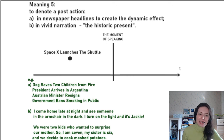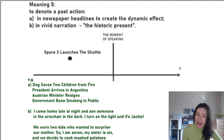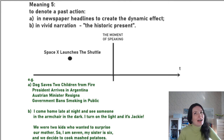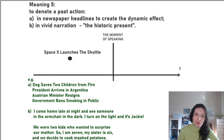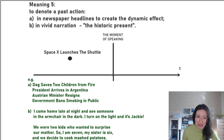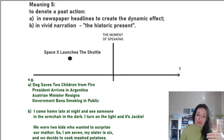It works exactly the same way in English. You say: 'I come home late at night and see someone in the armchair in the dark. I turn on the light and it's Jackie.' Or: 'Yesterday I had a very good mood and I decided to put on my white coat. I put on my white coat, I go outside, I stand at the bus stop and wait for my bus. And suddenly a car passes by and splashes mud all over my coat.' I was telling a past story, but as soon as I wanted to make it vivid, I changed to the present tense.